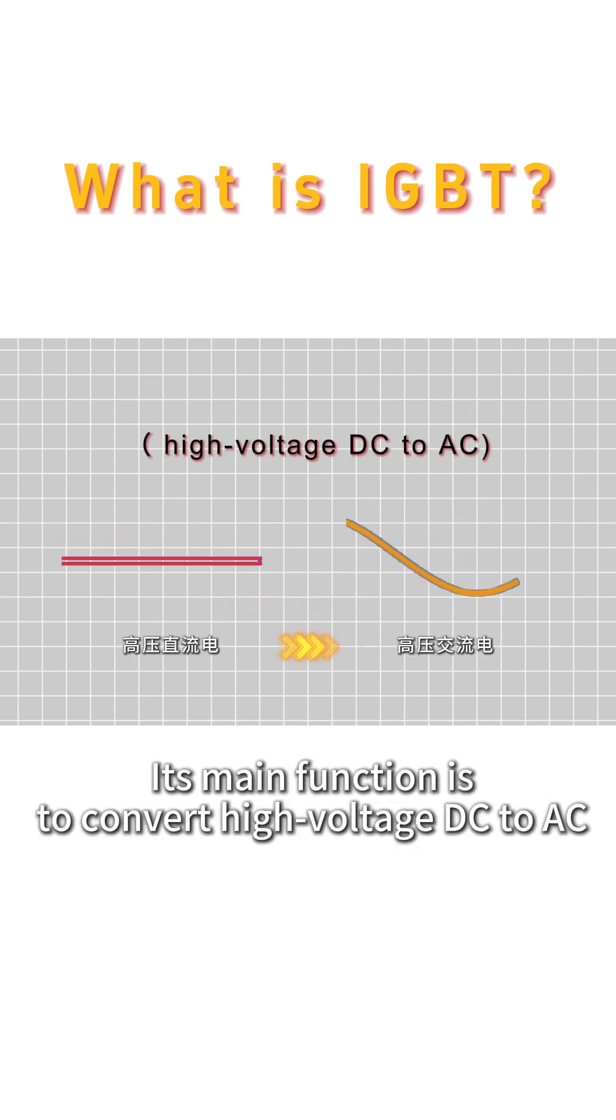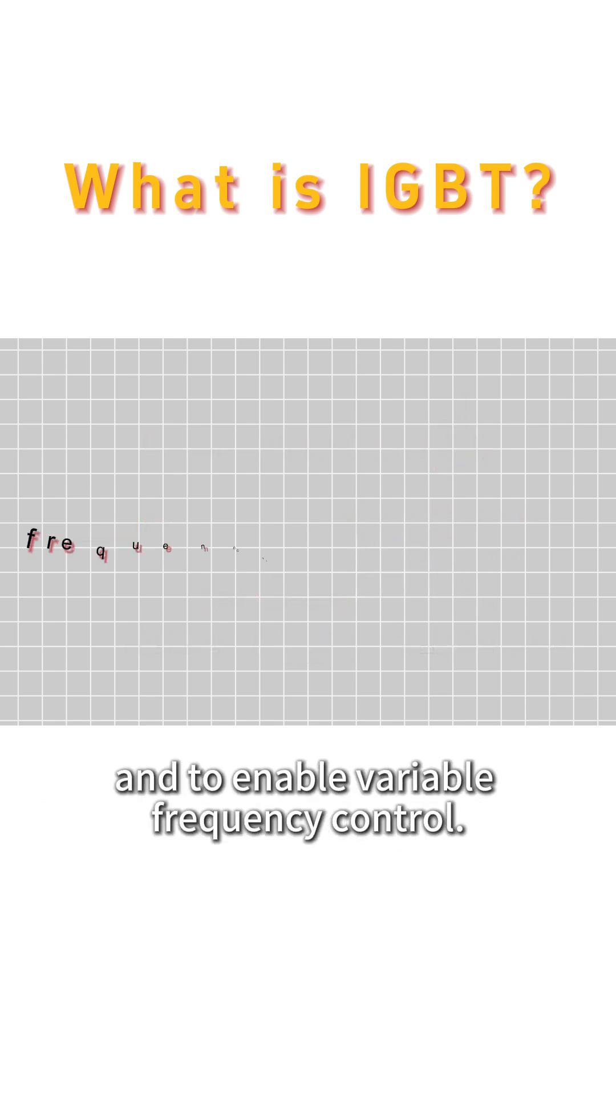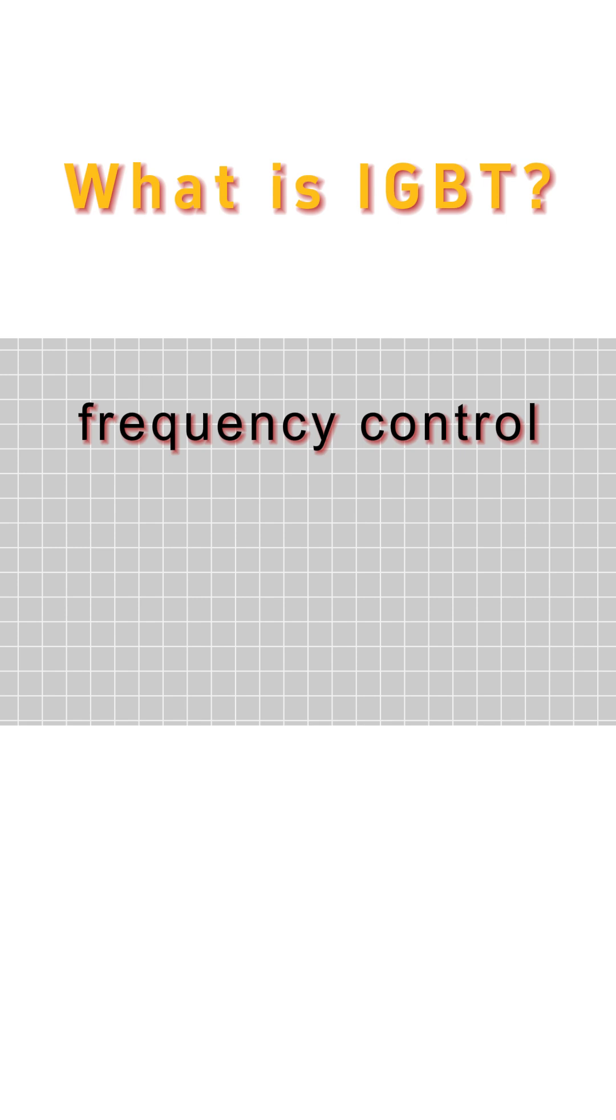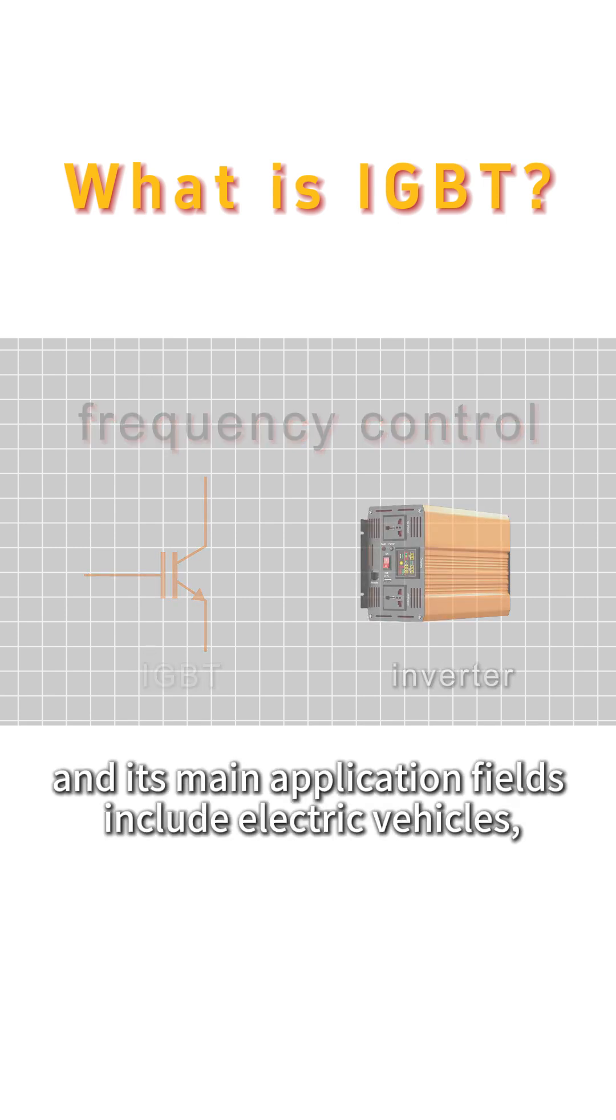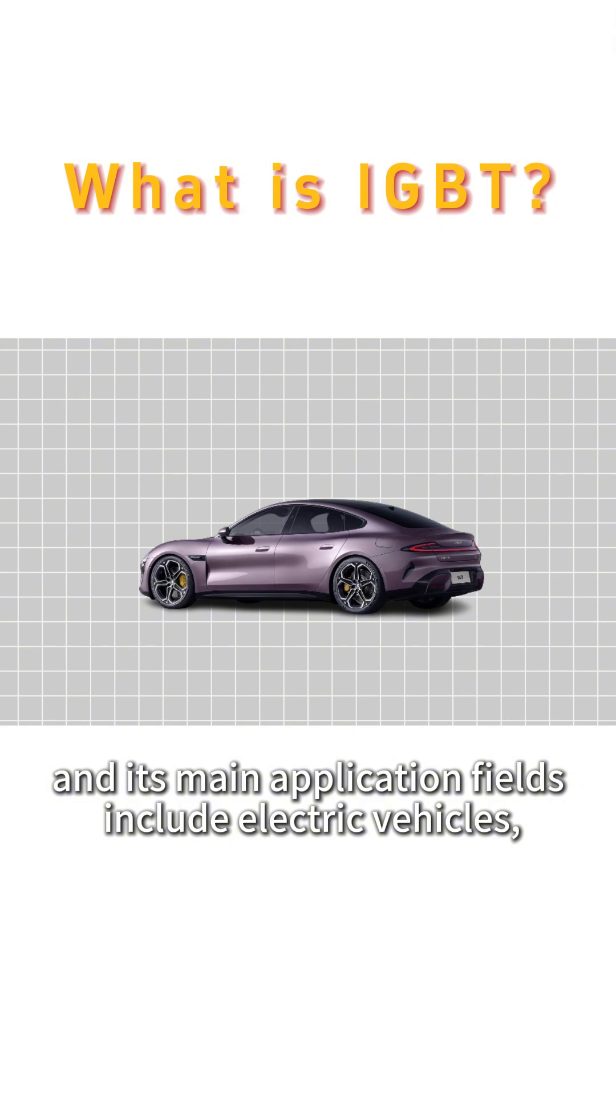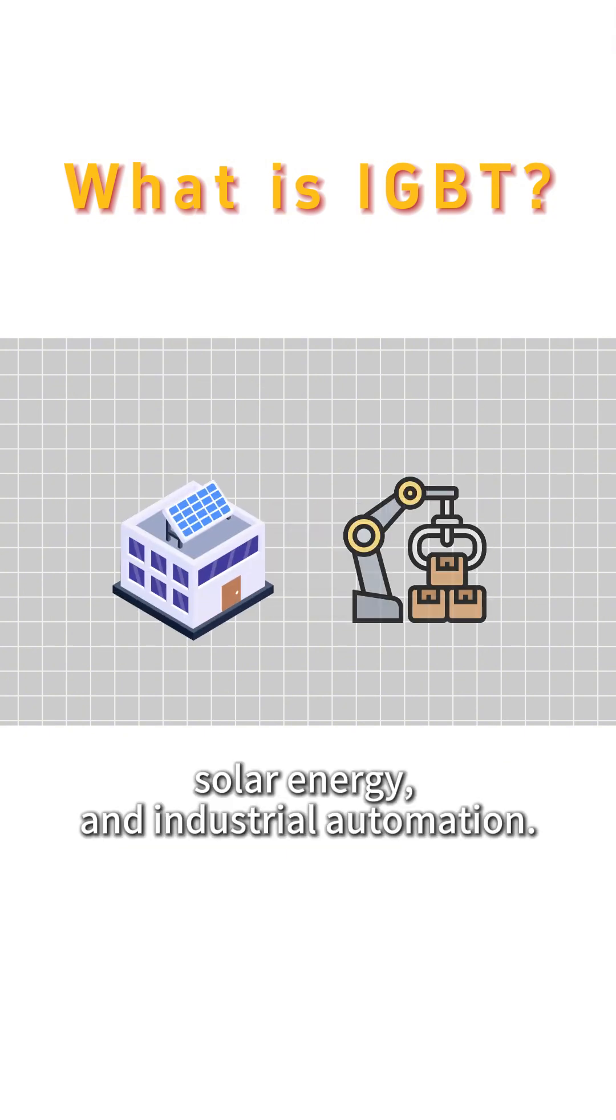Its main function is to convert high voltage DC to AC and to enable variable frequency control. The most common product using IGBT is the inverter, and its main application fields include electric vehicles, solar energy, and industrial automation.